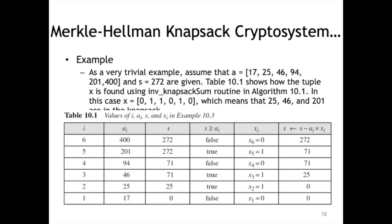Here is an example: The sum we require is 272, which is greater than the first element 400, so we don't include that. Then the next element is 201, which is smaller than S, so include it and update S as S minus A_i.